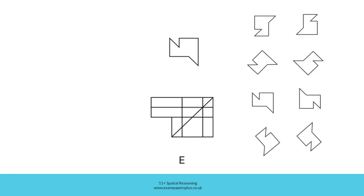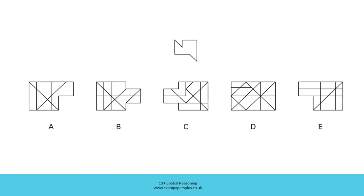Finally, option E: checking those prominent features within option E, if you check this pair of right angles it means the shape would need to be in this orientation with the triangular section to the left — and indeed it is. We would then look for the two sides forming a right angle, which are present, and the triangular cutaway section, which is also present. Shading those sections shows the shape is hiding in option E in a rotated position. E was the correct answer to this question.